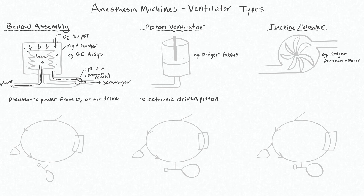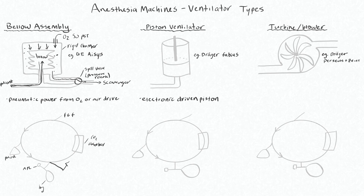Let's draw this vent in our circle system. Remember this is our fresh gas flow, our inspiratory unidirectional valve, and this will be our patient expiratory valve. This is our APL, our bag, and our CO2 absorber. The vent on this system is going to be over here.